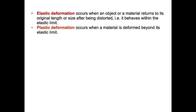Elastic deformation occurs when an object or a material returns to its original length or size after being distorted. It behaves within the elastic limit. That means, when we stretch or compress a material, it will return to its original position. That's elastic deformation behavior. While plastic deformation occurs when a material is deformed beyond its elastic limit. When we undergo this plastic deformation, it cannot return to its original position.